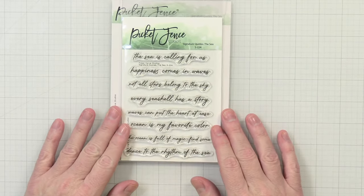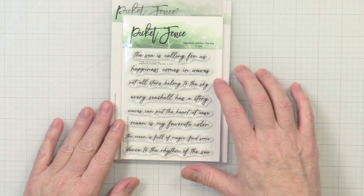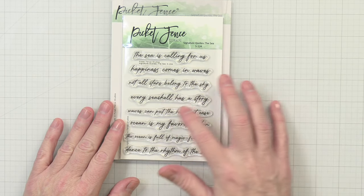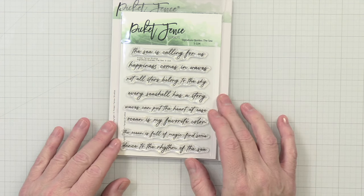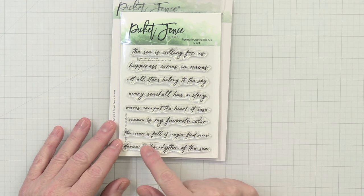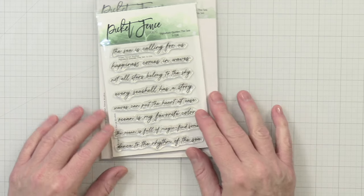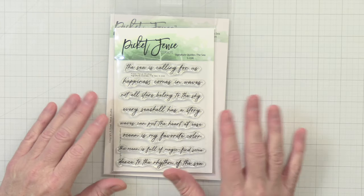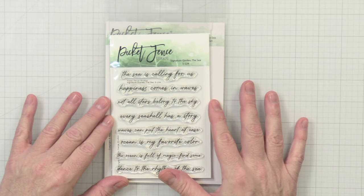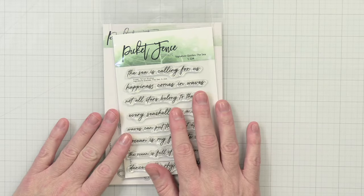Up next we have some sentiments here. We have: the sea is calling for us, happiness comes in waves, not all stars belong to the sky, every seashell has a story, waves can put the heart at ease, ocean is my favorite color, the ocean is full of magic find some, and dance to the rhythm of the sea. Really great sentiments for cards, especially if they're ocean themed, summer themed. Really great, and there are coordinating dies that come with this stamp set.